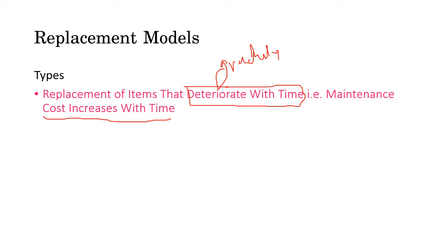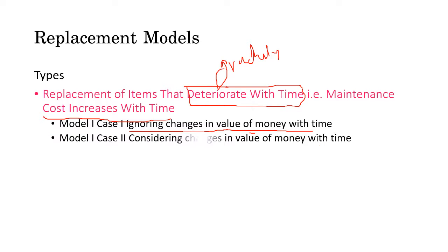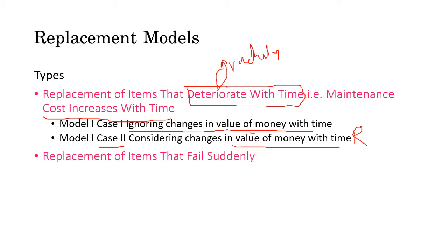Within this category of gradually deteriorating items, we consider two cases. In Case 1, we are going to ignore the time value of money — meaning we treat 100 rupees today the same as 100 rupees two or three years later. In Case 2, we consider that the value of money changes with time, and we will encounter the rate r in this model.